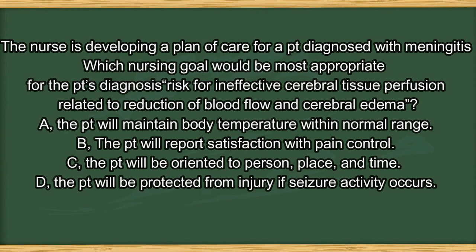Next question. The nurse is developing a plan of care for a patient diagnosed with meningitis. Which nursing goal would be most appropriate for the nursing diagnosis 'risk for ineffective cerebral tissue perfusion related to reduction of blood flow and cerebral edema'? A. The patient will maintain body temperature within normal range. B. The patient will report satisfaction with pain control. C. The patient will be oriented to person, place, and time. D. The patient will be protected from injury if seizure activity occurs.